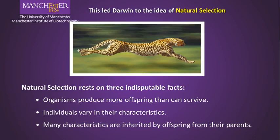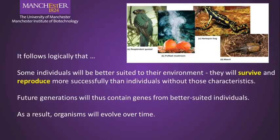This led Darwin to the idea of natural selection, which rests on three principal facts. One is that organisms produce more offspring than can survive. Secondly, individuals vary in their characteristics, so offspring are not identical to their parents. You pass on through your genes some of your characteristics, and therefore some individuals will be better suited to their environment. They are better adapted to survive and can carry genes to future generations to generate better suited individuals. As a result, organisms evolve over time to become better suited to the environment.